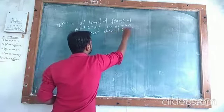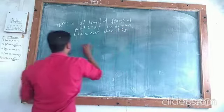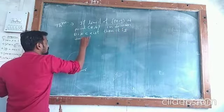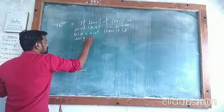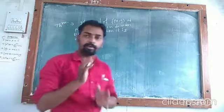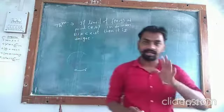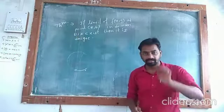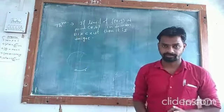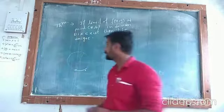It is unique. This means that the limit of f(x,y) exists, then this limit is unique.